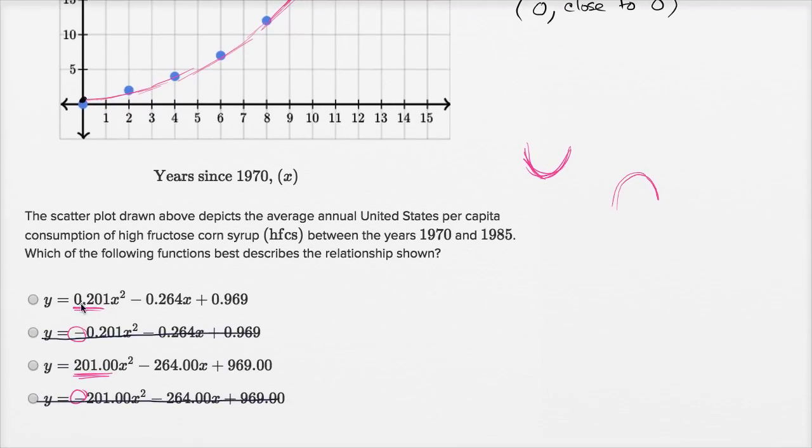So when x is zero here, this term goes away, this term goes away, and we're left with 0.969, so y would be 0.969. So this has the point zero comma 0.969 on it, which seems pretty close to our criteria that when x is zero, y is pretty close to zero.